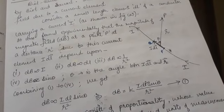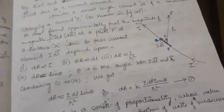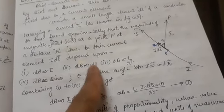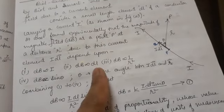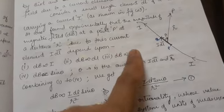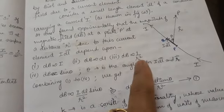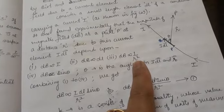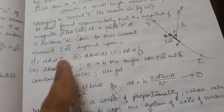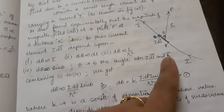This magnetic field dB is: number one, proportional to the current element I; number two, proportional to the length of the element DL; and proportional to 1 upon R squared, meaning inverse of the square of the distance of the observation point from the current element. Also it is proportional to sine theta, where theta is the angle between the DL vector and R vector.